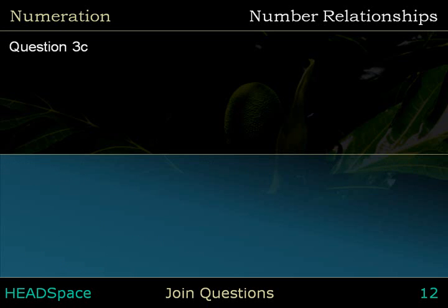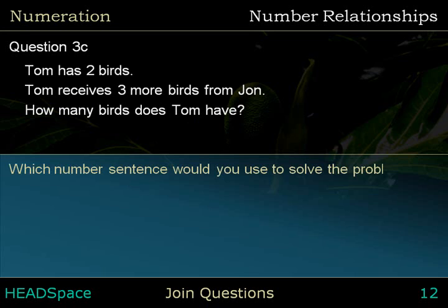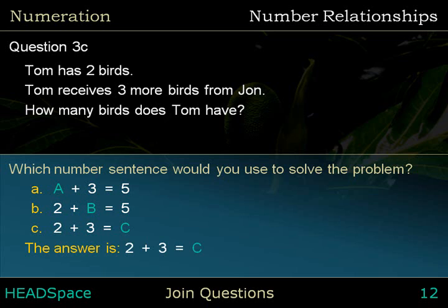Question 3c. Tom has two birds. Tom receives three more birds from John. How many birds does Tom have? Which number sentence would you use to solve the problem? The answer is: two plus three equals blank. Factor C is unknown.